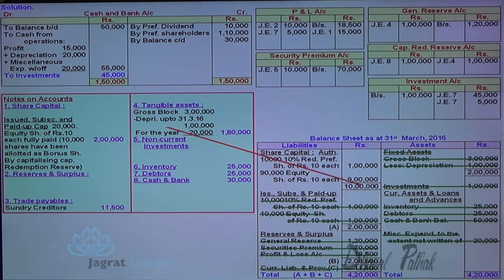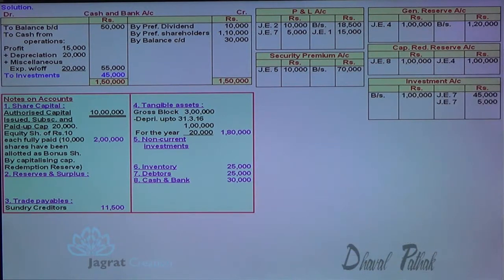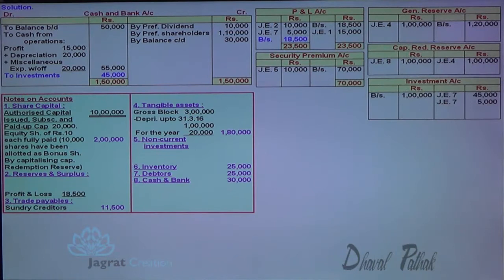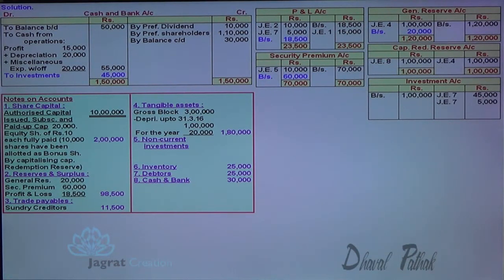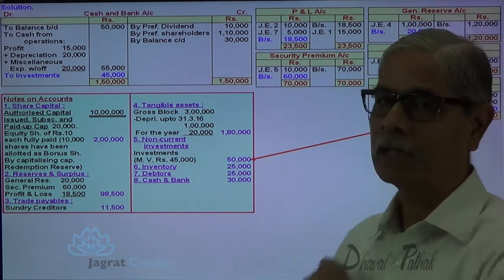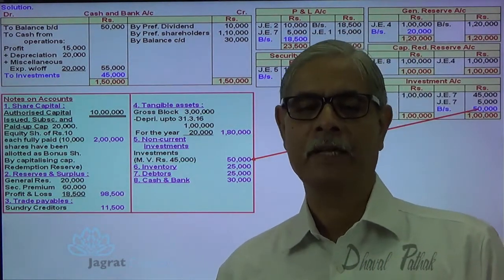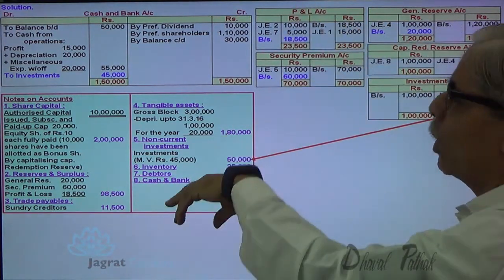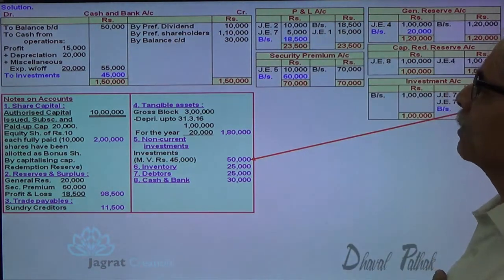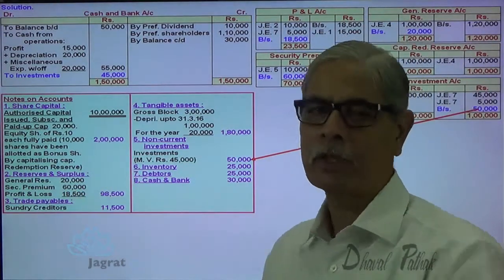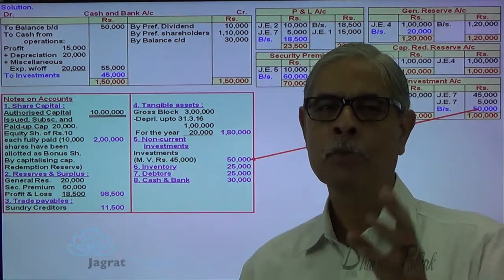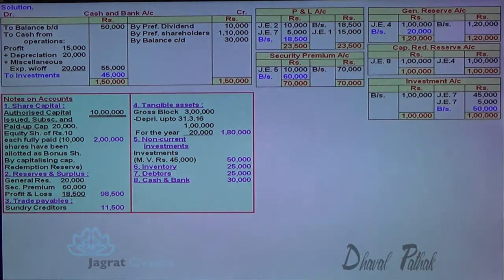Now let me close these accounts. Authorized share capital remains as it is. Profit and loss account balance: reserves and surplus 18,500. Security premium: 60,000. General reserve: 20,000. Capital redemption reserve account is closed. Investment balance: 50,000, its market value is 45,000 because we know the market value is 90%. When you prepare the notes to accounts, it's my advice to you: write all these details — profit and loss account opening balance, plus profit during the year, minus 10,000, redemption premium written off — and give detailed description of general reserve, security premium, and profit and loss account in the examination to fetch full marks. On the basis of these notes to accounts, I want to prepare the balance sheet.